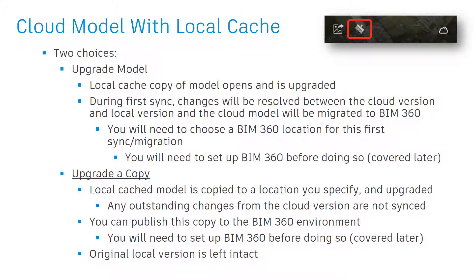Let's start with the most likely scenario: a cloud model that also has been locally cached. You can tell that a local cache exists by the broom icon at the bottom of the model tile on the home screen. When you open one of these models, you'll be given two choices: upgrade model and upgrade a copy. If you choose upgrade model, the locally cached version will be upgraded as it opens. The first time you sync the model, it will be migrated to the new BIM 360 environment, and InfraWorks will sync changes between the cloud version and local version. During the migration, you'll need to select a BIM 360 location for the cloud model, so that will have to be set up beforehand.